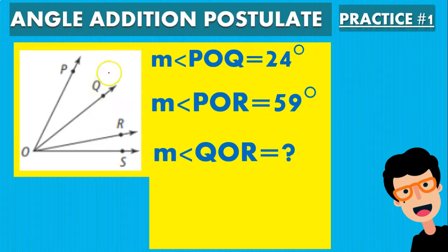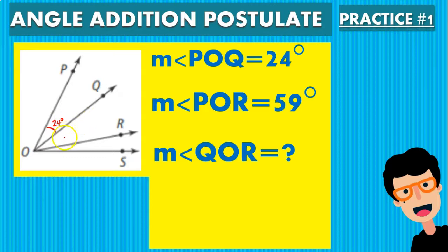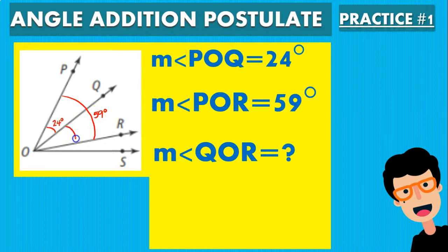And as you remember from the postulate, that means that this angle plus this angle is going to give us the big angle. So in this case we have POQ, which is this angle, being 24 degrees. And then POR, which is the big angle, being 59 degrees. So how much is this angle going to be?